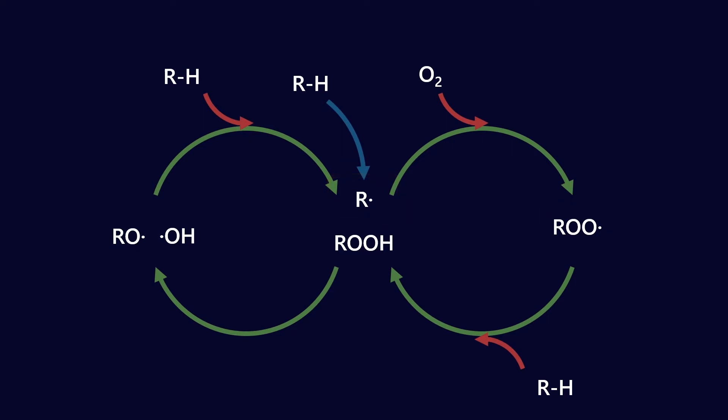ZDDPs actually focus on the other half cycle. They're called peroxide decomposers and they focus on this ROOH molecule. That's really important because when these do decompose, they react with even more alkyl groups and cause the formation of further alkyl radicals.